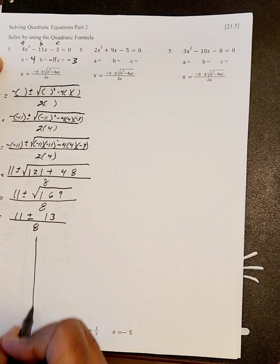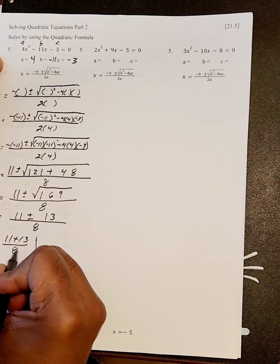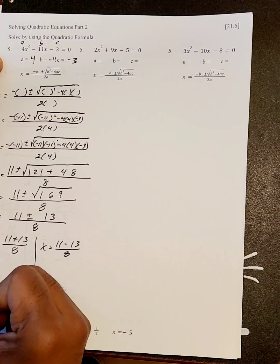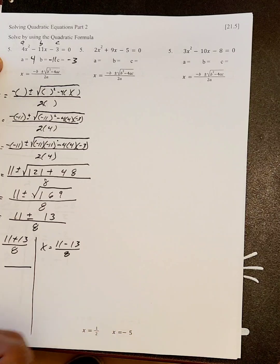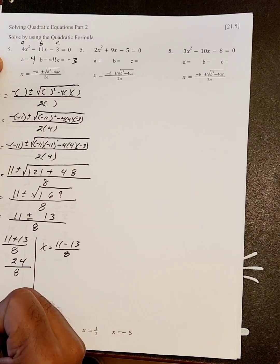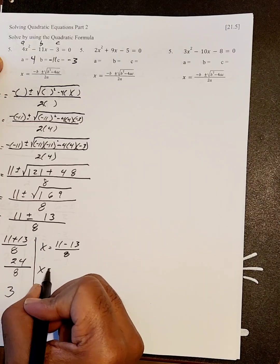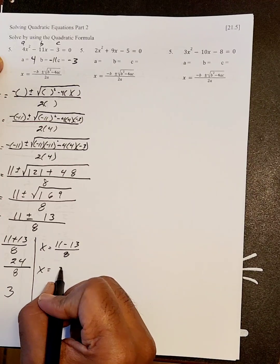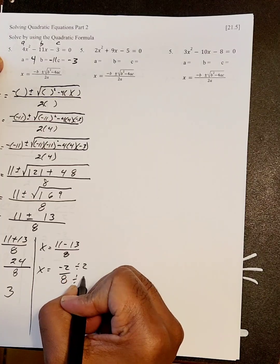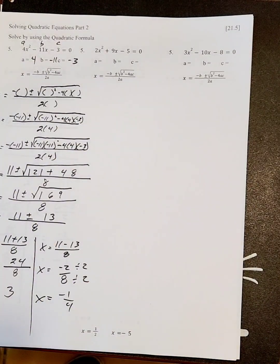Now let's split this up into two pieces. We have x equals 11 plus 13 all over 8, and x equals 11 take away 13 all over 8. If we add 11 and 13, we get 24 over 8, and 24 divided by 8 is 3. Here we're going to have 11 minus 13, which is negative 2, all over 8. And we can divide both by 2, which gives us negative 1 over 4.